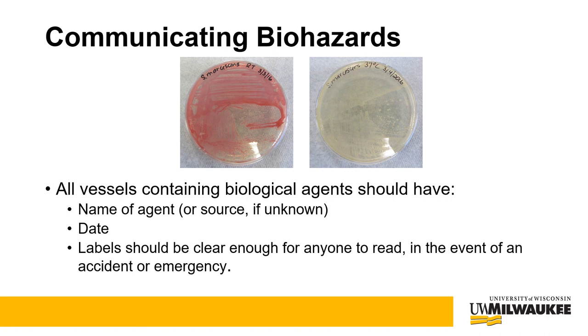When labeling all cultures in your laboratory, make sure you are communicating the biohazard effectively to anyone who may encounter that space in an emergency situation. All vessels containing biologically hazardous agents should have the name of the agent or the source if unknown, the date, and labels should be clear enough for anybody to read. This concludes Module 4, Primary and Secondary Containment.